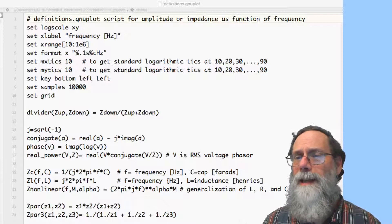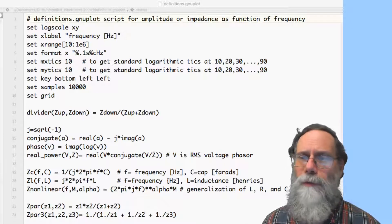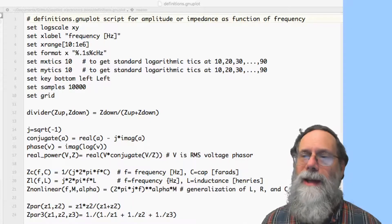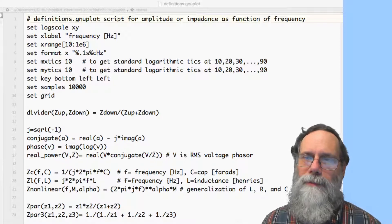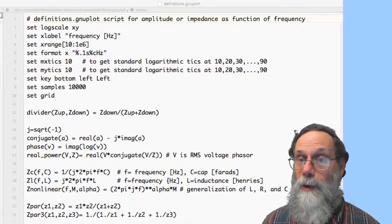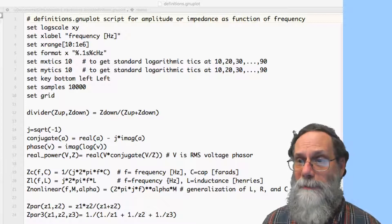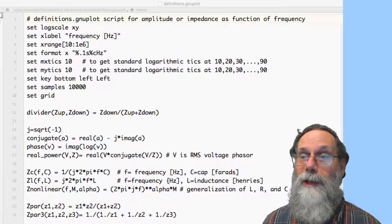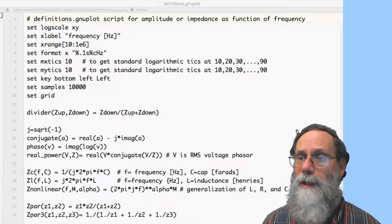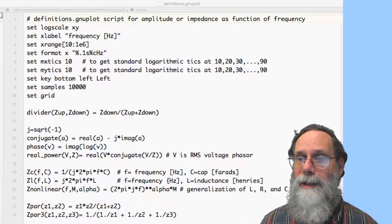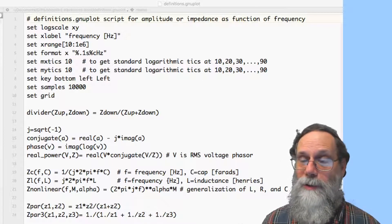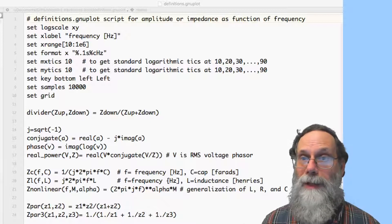The set samples 10,000 is saying when you're drawing the curve for a function, not where you've got data, but when you're drawing a function, use 10,000 points, and it'll produce a very smooth curve. If this is too slow, you can get by with fewer samples. But it's a good idea, particularly if you have something that might have some sharp spikes or something in it, to over-sample so that you can get smooth curves and really see what's going on, and not get artifacts due to under-sampling. Set grid turns on a grid for the background so that you can see where the decades are for both the x-axis and the y-axis.